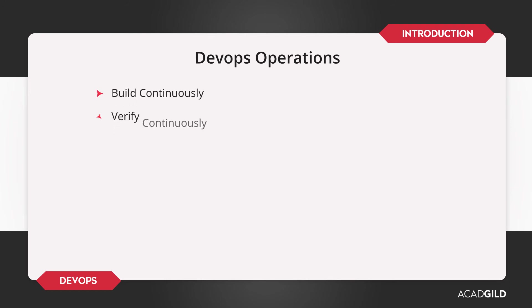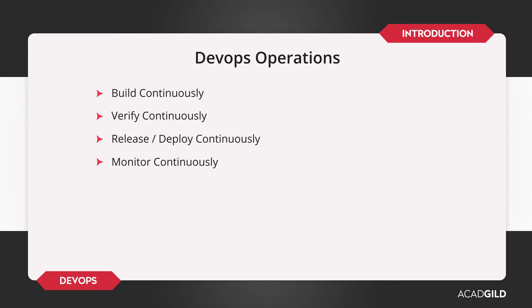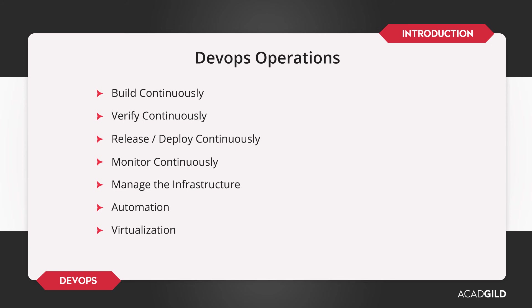Build continuously, verify continuously, release and deploy continuously, and monitor the applications or products continuously. In addition to that, you should also play a role from the operations side. As a DevOps professional, you need to manage the infrastructure at a high level, but not to the level of the operations team, and provide some sort of automations and virtualizations. All these responsibilities are fulfilled by DevOps professionals — responsibilities that are not typically handled by the development team.